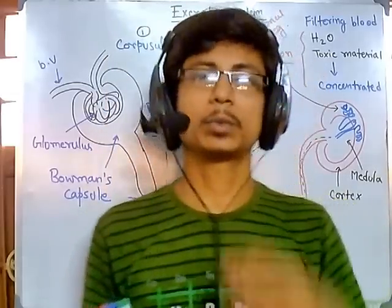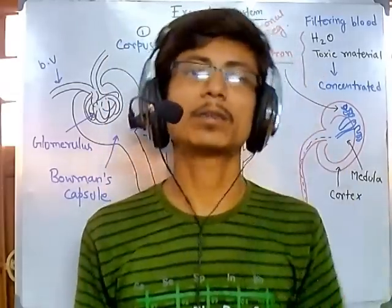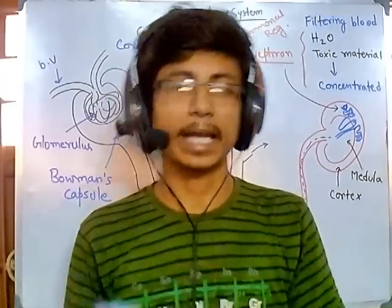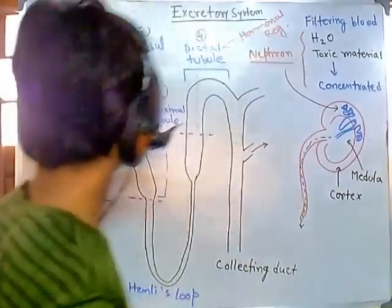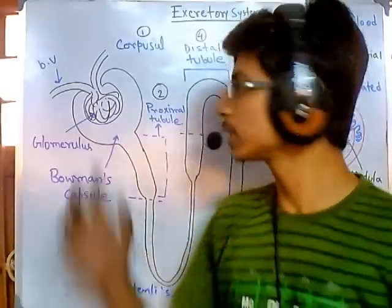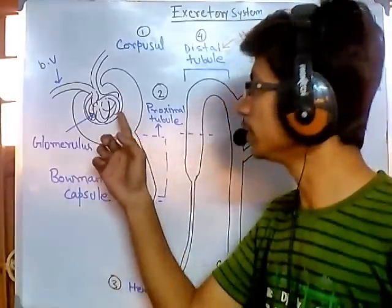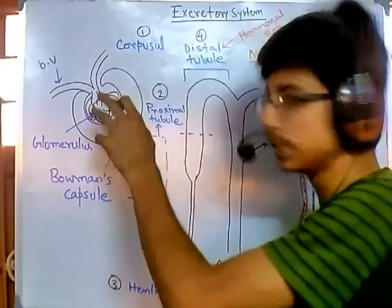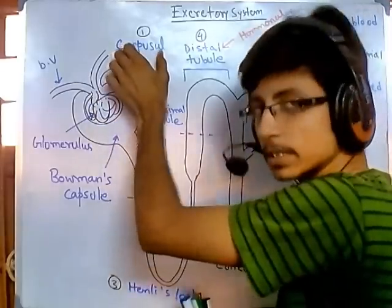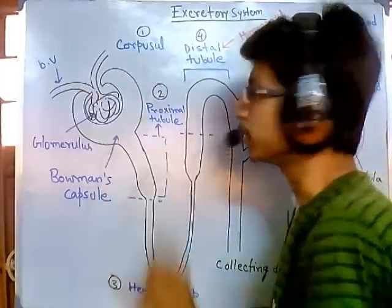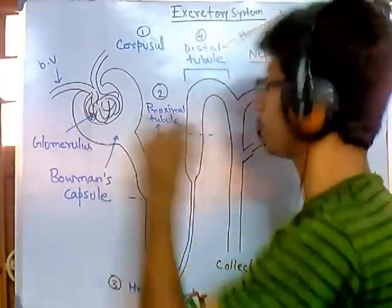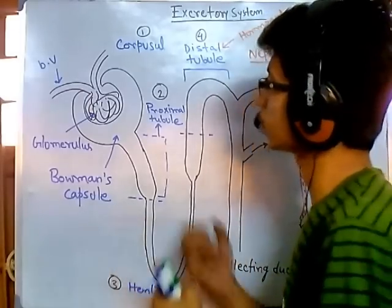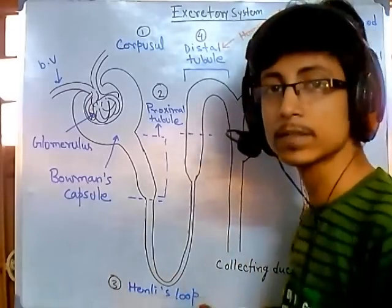The first task is to filter out the blood and filter the toxic materials out of the blood. That particular task is achieved by the glomerulus and Bowman's capsule together, which is called the corpuscle. The corpuscle does the most important first part — selecting out those toxic materials from the blood.